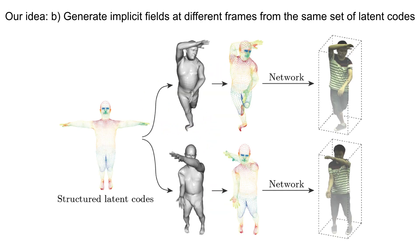With the dynamic human representation, we establish a latent variable model that maps the same set of latent codes to the density and color fields at different frames, which naturally integrates observations across video frames.